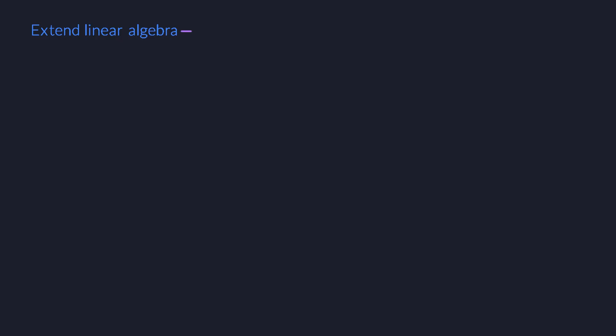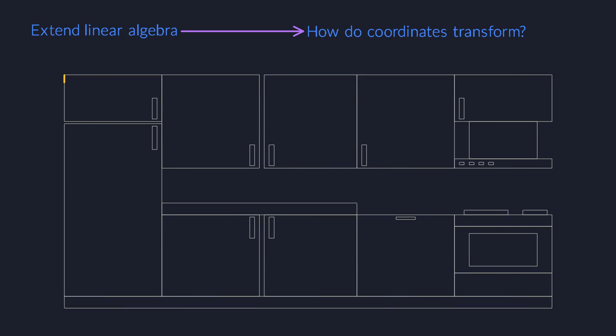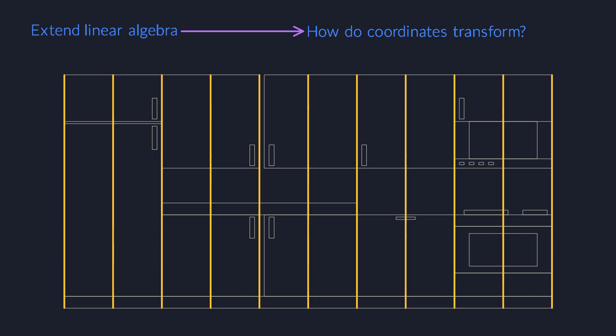First, we notice that the components of a vector behave in a very odd way. They transform in the opposite direction from the basis vectors. We call this behavior contravariant, and it leads us to discover a brand new kind of vectors called one-forms. With this new discovery, linear algebra becomes tensor algebra.